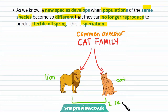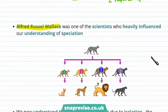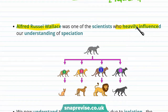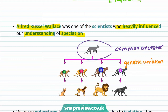These are two separate species, and we know they're separate species as they can't interbreed to produce fertile offspring. Alfred Russel Wallace is a prominent scientist who heavily influenced our understanding of speciation. His observations led to the understanding that speciation starts with a common ancestor, whose populations split up and acquire genetic variation, leading to evolutionary divergence. This gives us the species we see today.